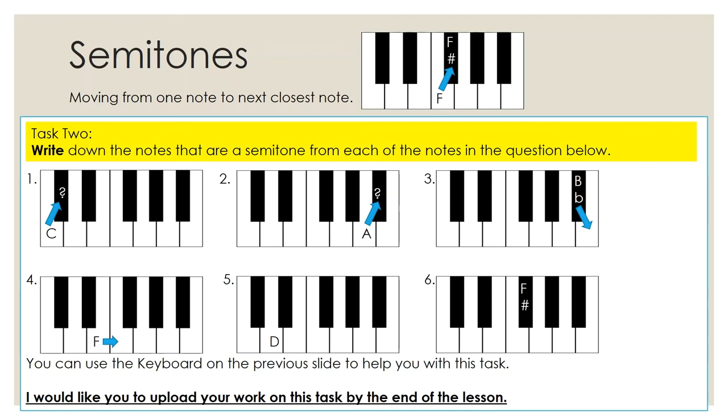So for question one, we've got C. What's the semitone away from C? Question two, we've got A. What's the semitone away from A? Then we've got question three, B flat. What's the semitone away from that? And where's the arrow point to?